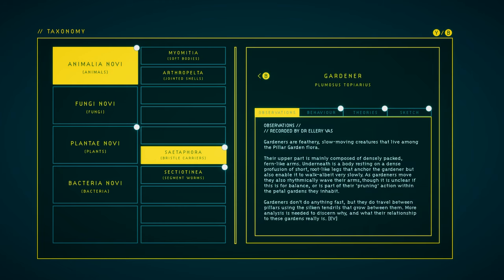The gardener. Oh, we did everything for the gardener. Okay, observations. Gardeners are feathery, slow-moving creatures that live among the pillar garden flora. Their upper part is mainly composed of densely packed, fern-like arms. Underneath is a body resting on a dense profusion of short, root-like legs that anchor the gardener but also enable it to walk, albeit very slowly. As gardeners move, they also rhythmically wave their arms, though it's unclear if this is for balance or is part of their pruning action within the petal gardens they inhabit. Gardeners don't do anything fast, but they do travel between pillars using the silken tendrils that grow between them. More analysis is needed to discern why and what their relationship to these gardens really is.